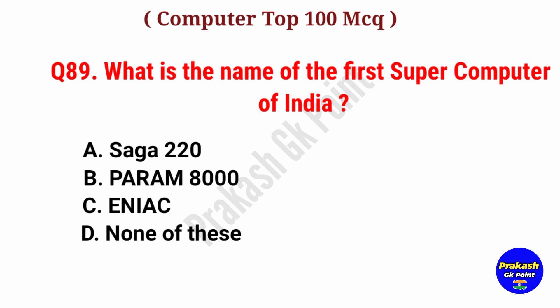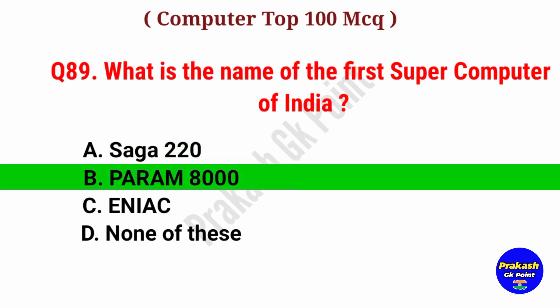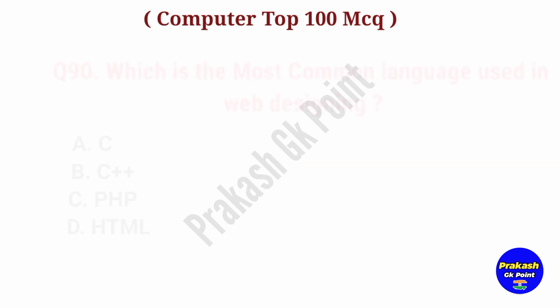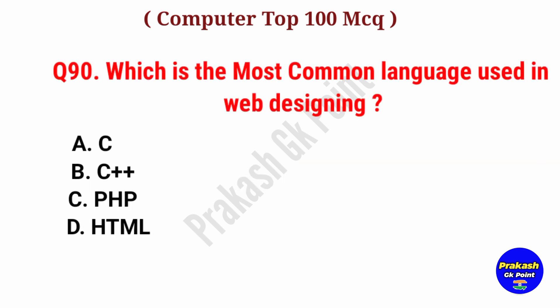What is the name of the first supercomputer of India? Answer: Option B, PARAM 8000.